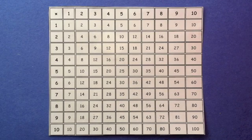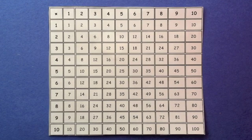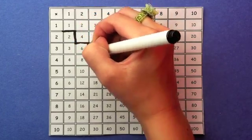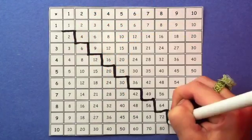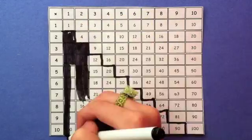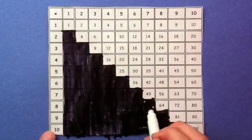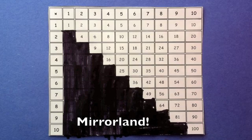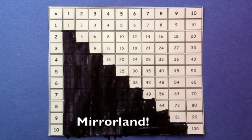But wait, it's not nearly that hard. First of all, almost half the numbers are duplicates. For example, 6 times 3 is the same as 3 times 6, 18. So if I draw this zigzag line, then every fact below it is already represented somewhere up above it. I call this mirrorland. And if I take away these extra facts, we're already down to 55 numbers.